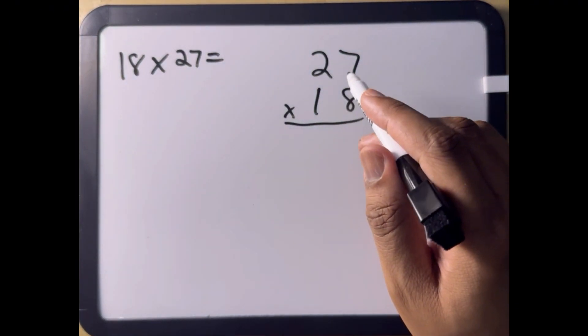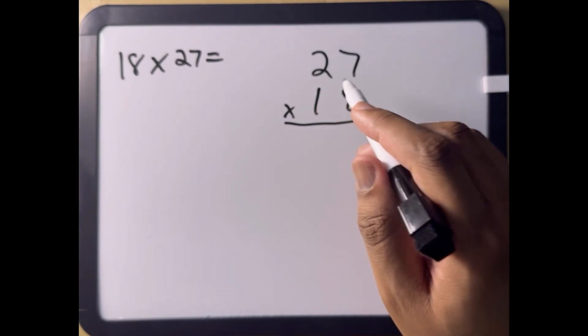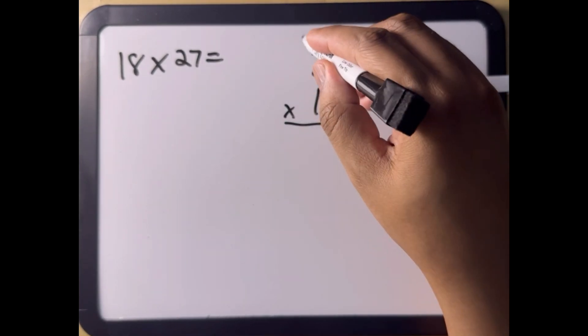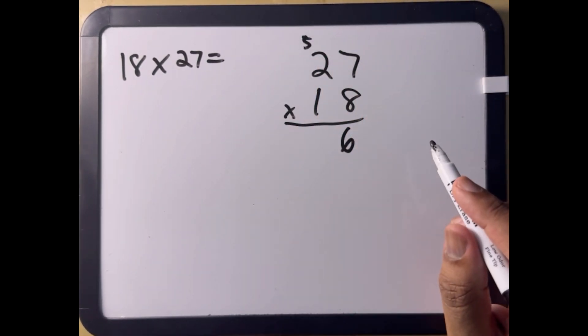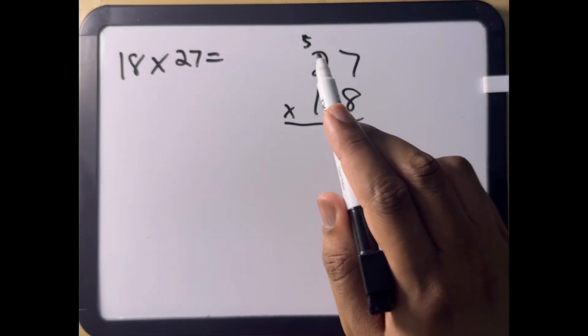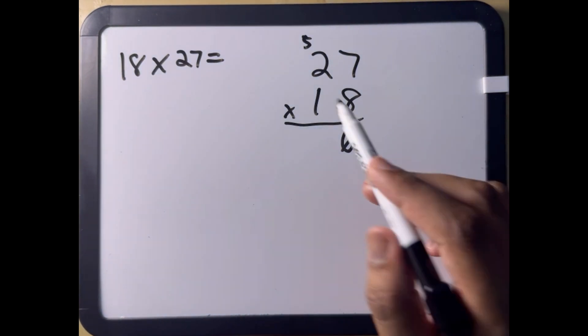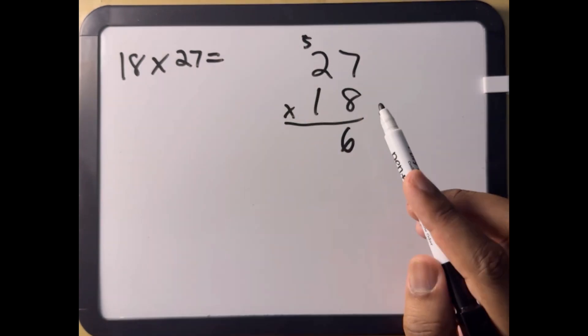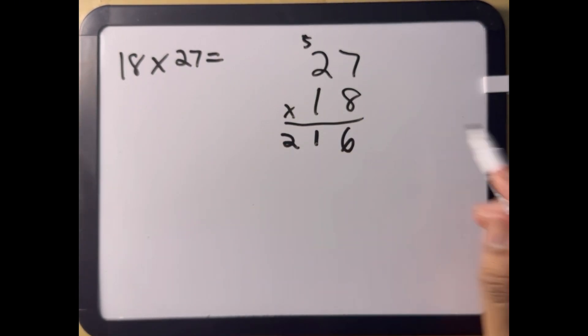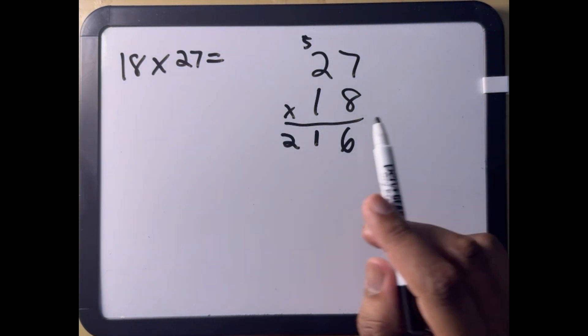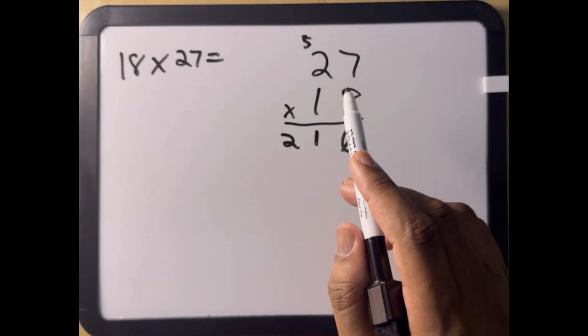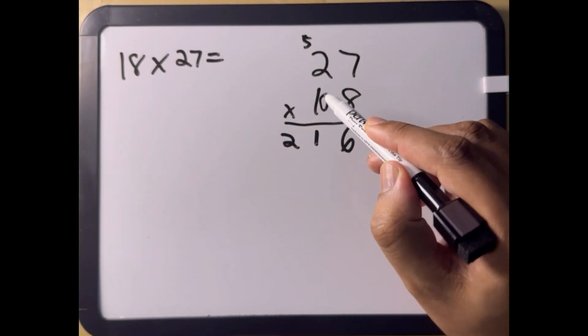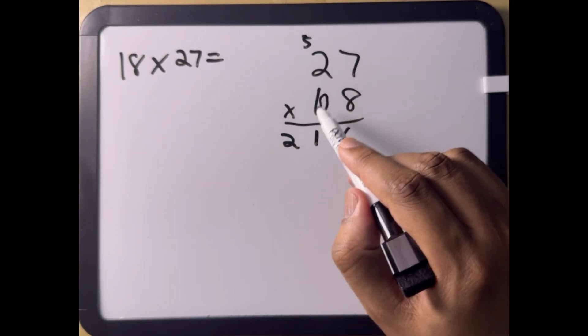Now, 8 times 27, we have to do these individually. So we'll do 8 times 7 first, which gives us 56. And we'll bring the remainder of 5 to the top, to the next column. Now we do 8 times 2, which will give us 16. We have to add the remainder of 8 times 2. So 8 times 2 is 16 plus 5, which gives us 21. Now we do the same with the 1, 1 times 7, but really, since the 1 is in the tens place and not the ones place, it'll be 10 times 7. And 10 times 7 is 70.